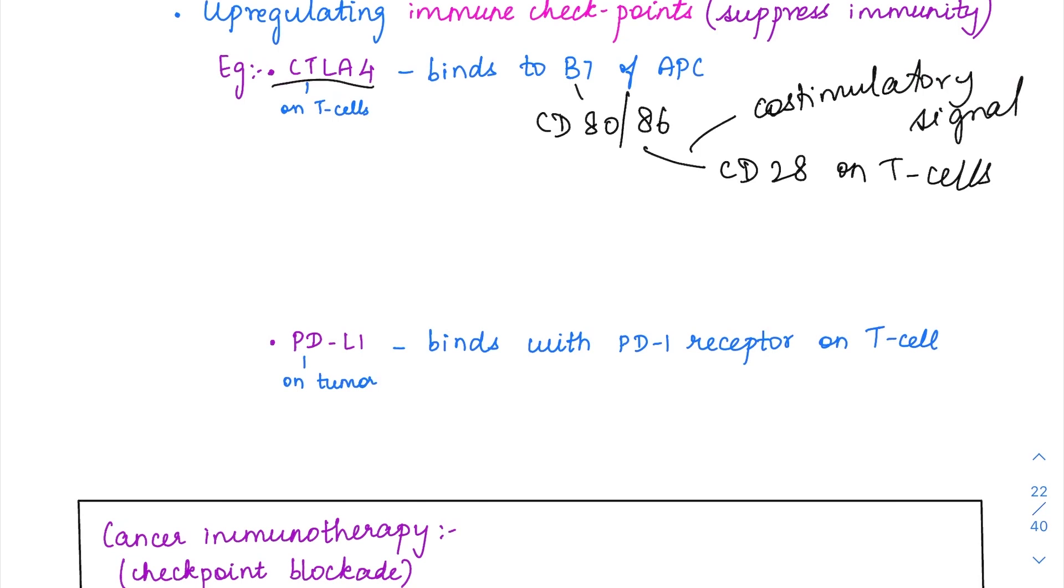But when CTLA-4 is present on the T cells, it has much more affinity to the CD80 or 86 as compared with that of the CD28. So this CTLA-4 is going to bind with the CD80-86, so CD28 cannot bind. Once the binding of CTLA-4 with the CD80 or 86 happens, it is actually an inhibitory kind of interaction. It is an inhibitory signal.